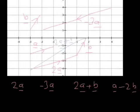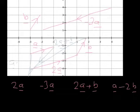For A minus 2B: A is already there, then minus B takes me down to there, then minus another B takes me further down. So the whole vector from start to end is A minus 2B. That's A, then minus B, then minus another B — so that vector is A minus 2B.